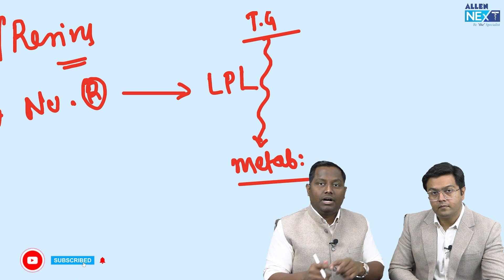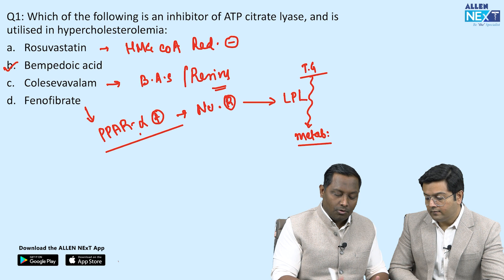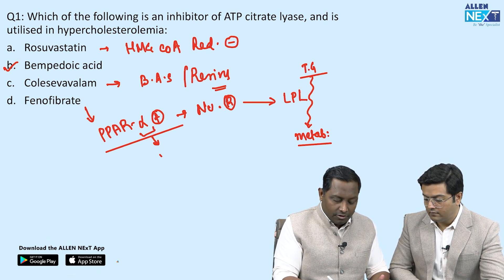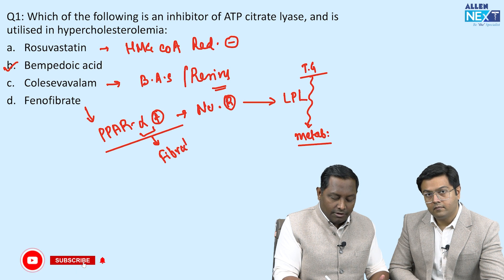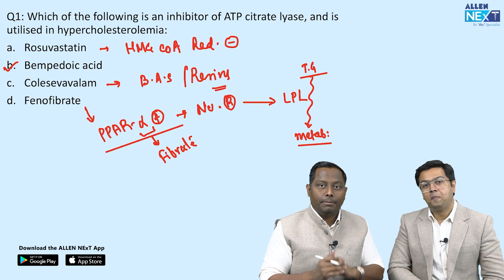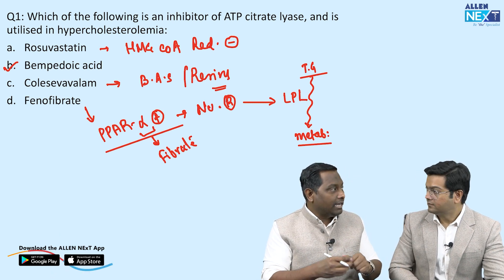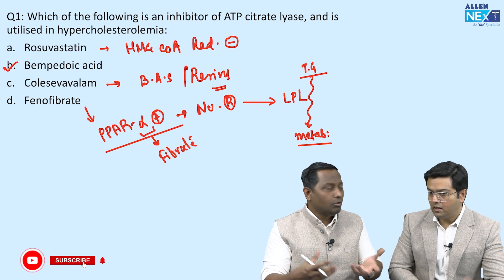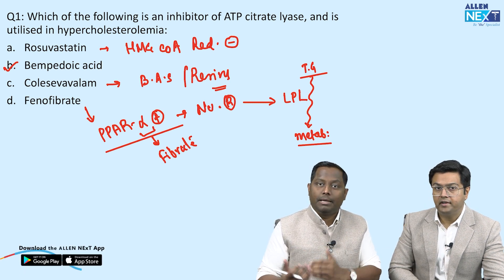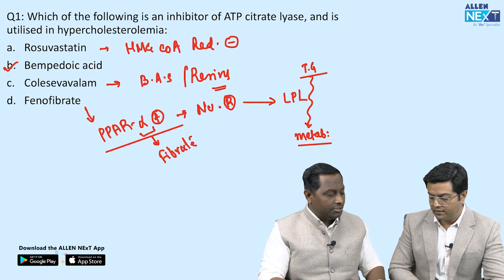To remember PPAR-alpha — alpha for fibrate: 'phi' connects to fibrate. There is also PPAR-gamma — gamma for glucose — which corresponds to pioglitazone, applied in diabetes. So PPAR-alpha is for fibrates and PPAR-gamma is for thiazolidinediones like pioglitazone.